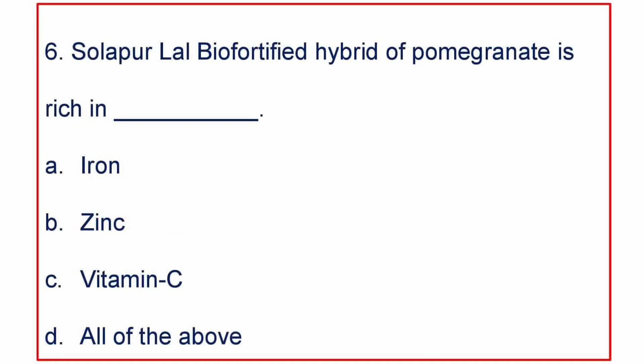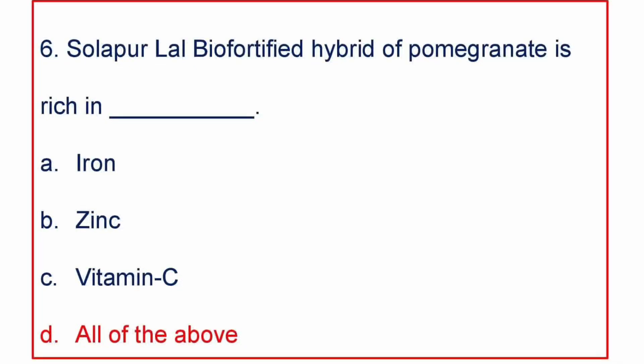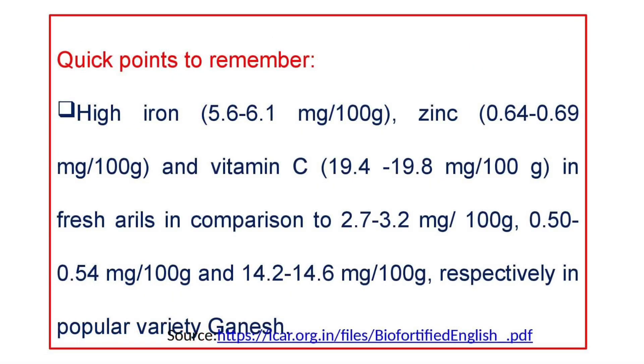This is one of the latest questions: Solapur-Lal biofortified hybrid of pomegranate is rich in: A. Iron, B. Zinc, C. Vitamin C, or D. all of the above. The answer is it is rich in Iron, Zinc, and Vitamin C. This hybrid has high Iron, Zinc, and Vitamin C content in fresh arils when compared to that of the popular variety of pomegranate, i.e., Ganesh.